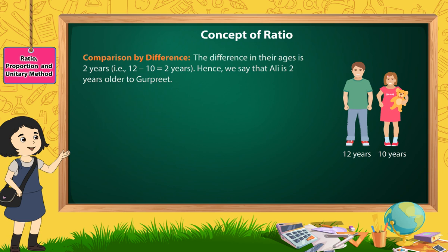Comparison by Difference: The difference in their ages is two years. That is, 12 minus 10 is equal to two years. Hence, we say that Ali is two years older than Gurpreet.